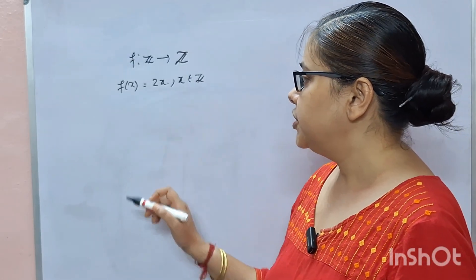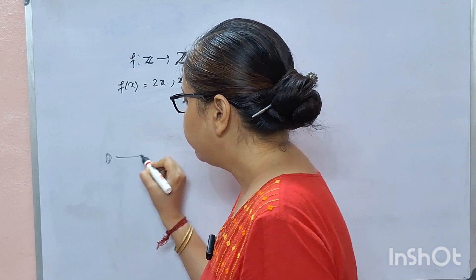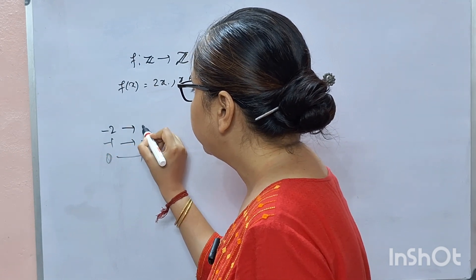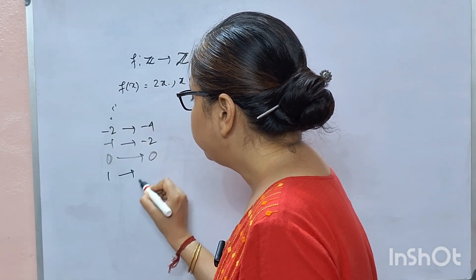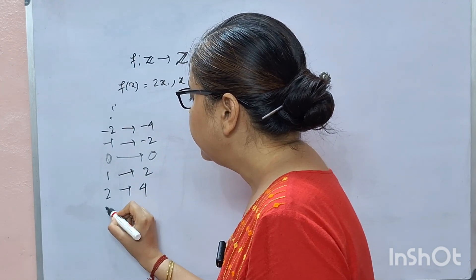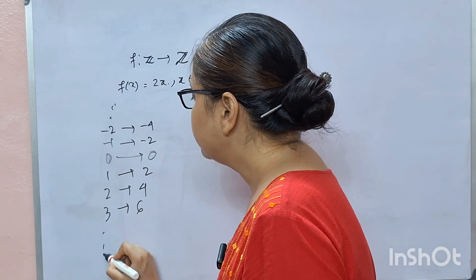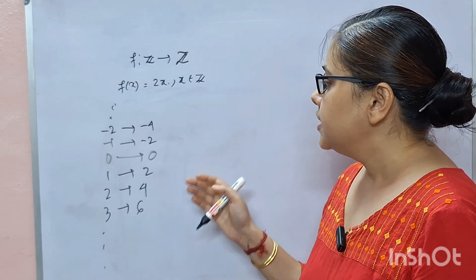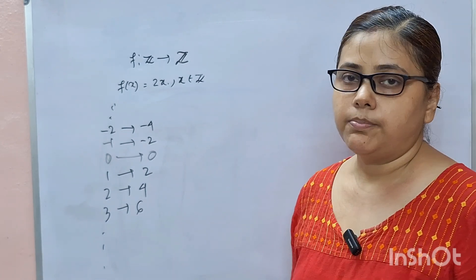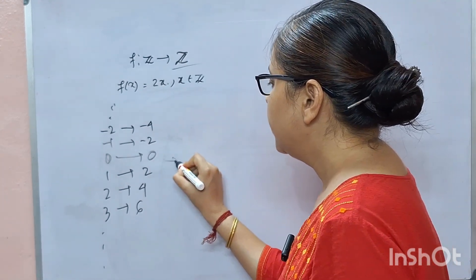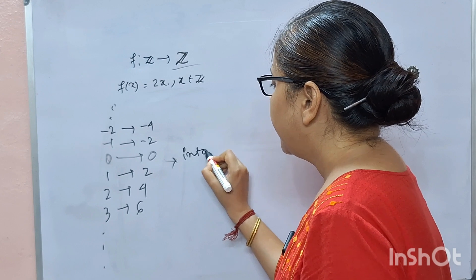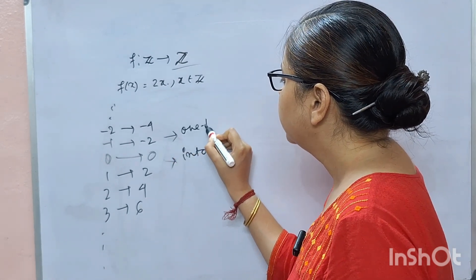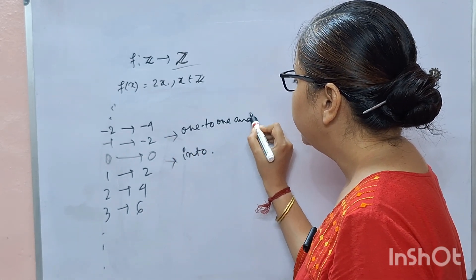Consider the mapping F(x) = 2x from the set of integers to the set of integers. Here, 0 maps to 0, −1 maps to −2, −2 maps to −4, and so on. Also, 1 maps to 2, 2 maps to 4, and 3 maps to 6. The image set or range of F is the set of even integers, which is a proper subset of the set of integers. So this is an into mapping. Also, separate elements have separate image points, so this is a one-to-one and into mapping.